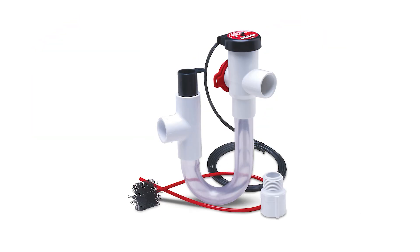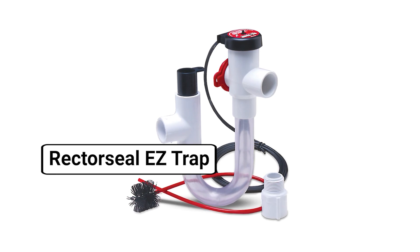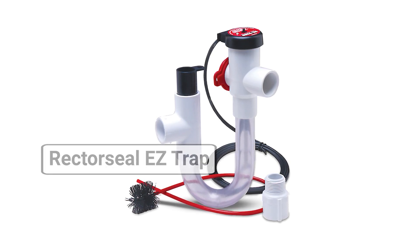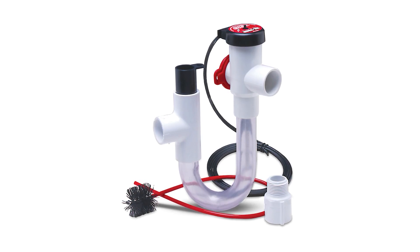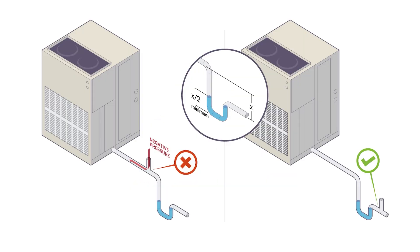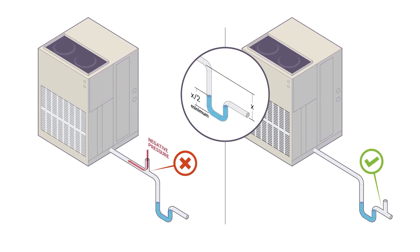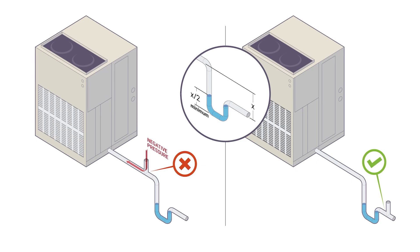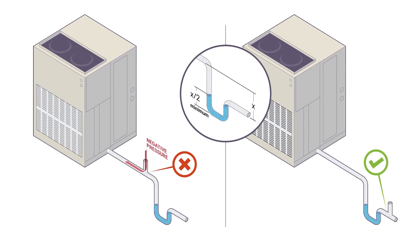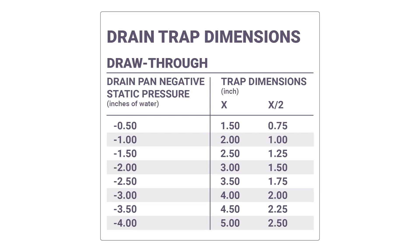They're currently using the Rector Seal Easy Traps, which are a one-inch trap depth, but the solution seems to be fabricating a deeper trap. There are formulas online but they're confusing, so a dive into the effect that negative pressure has on trap depth would be really helpful, especially this time of year.